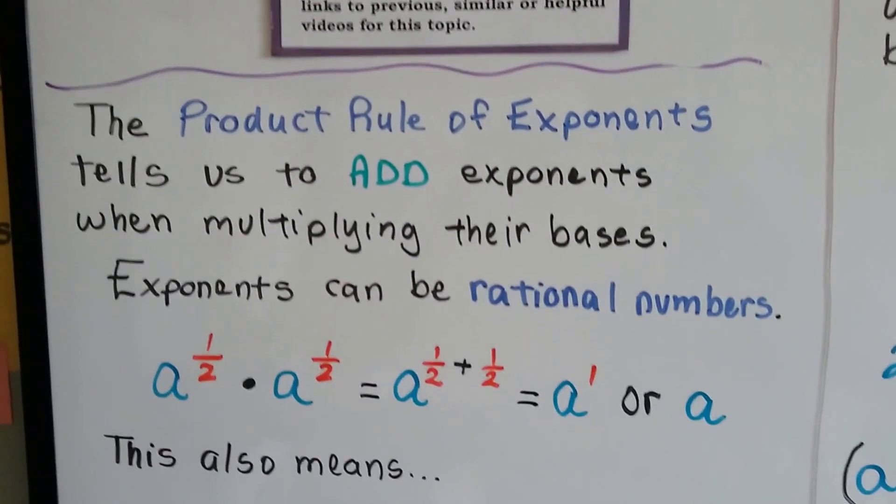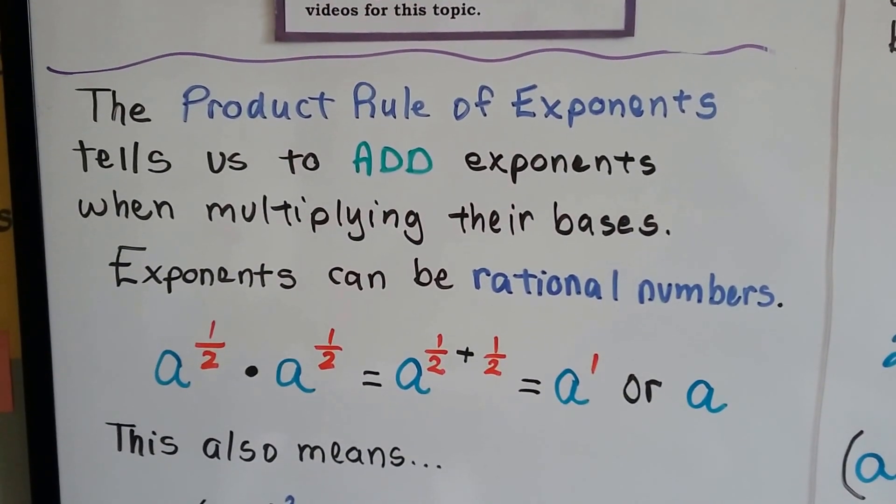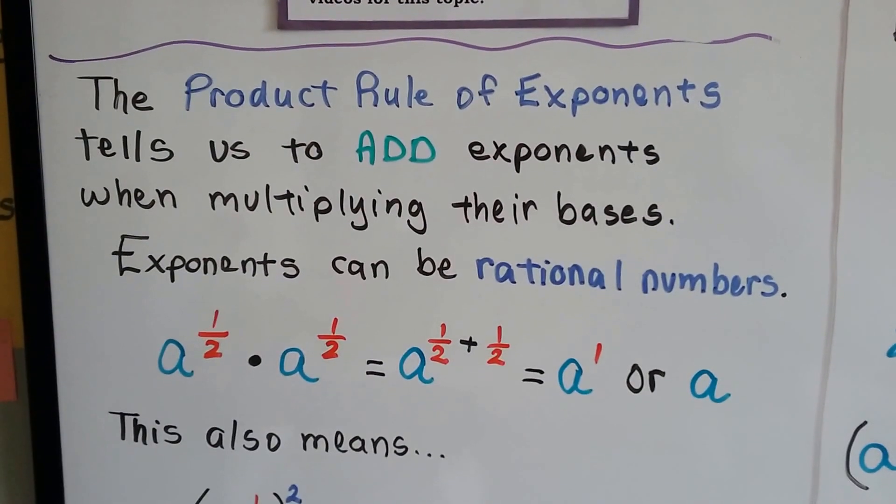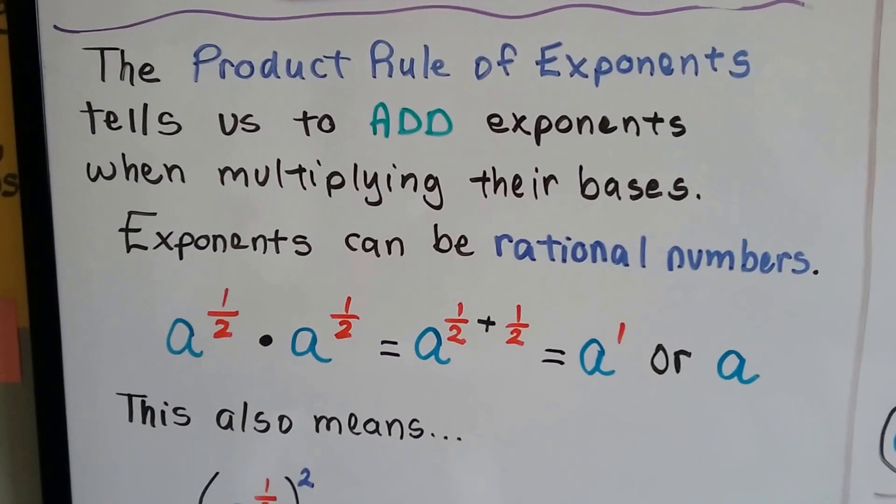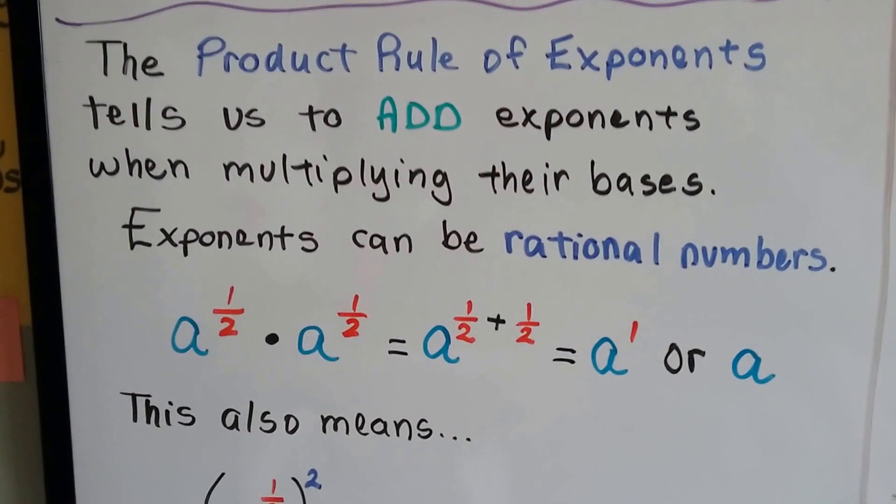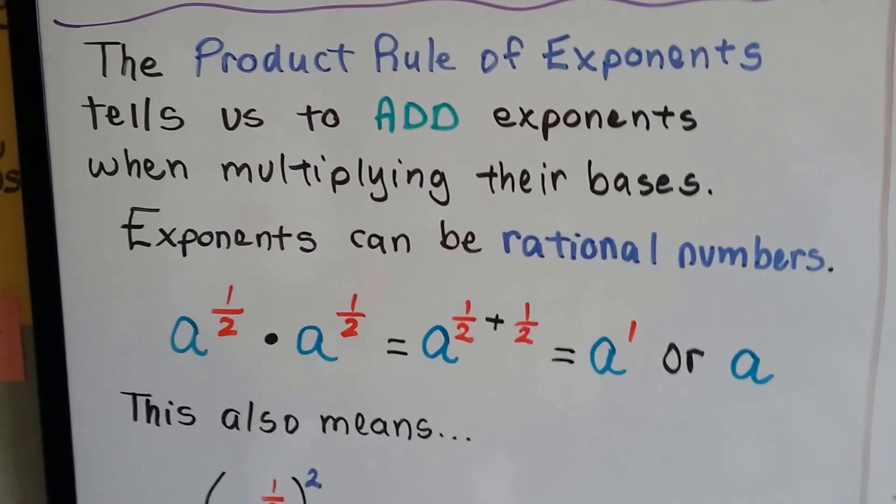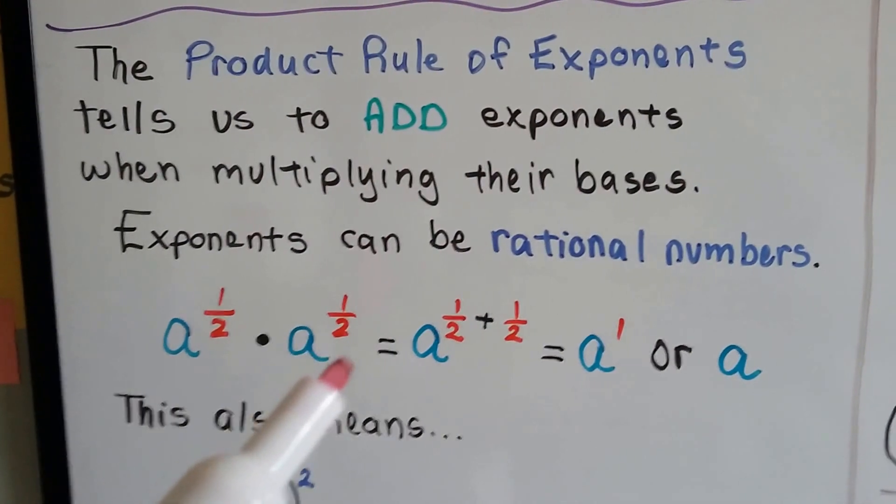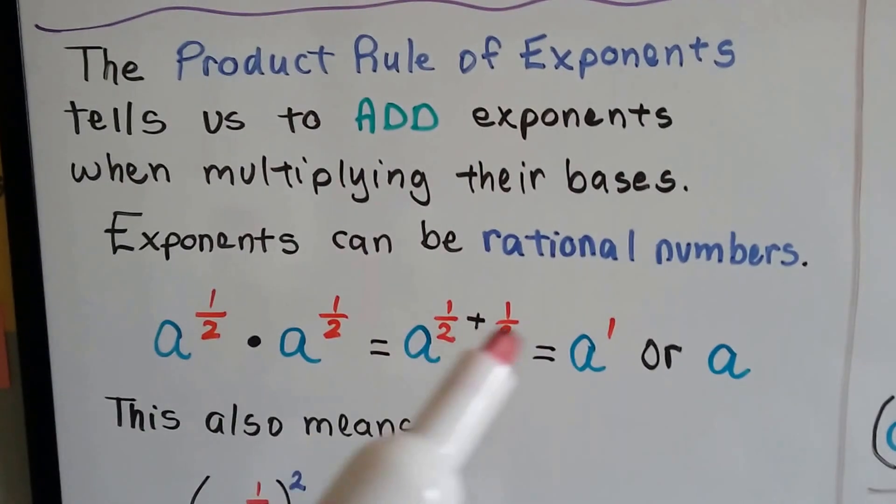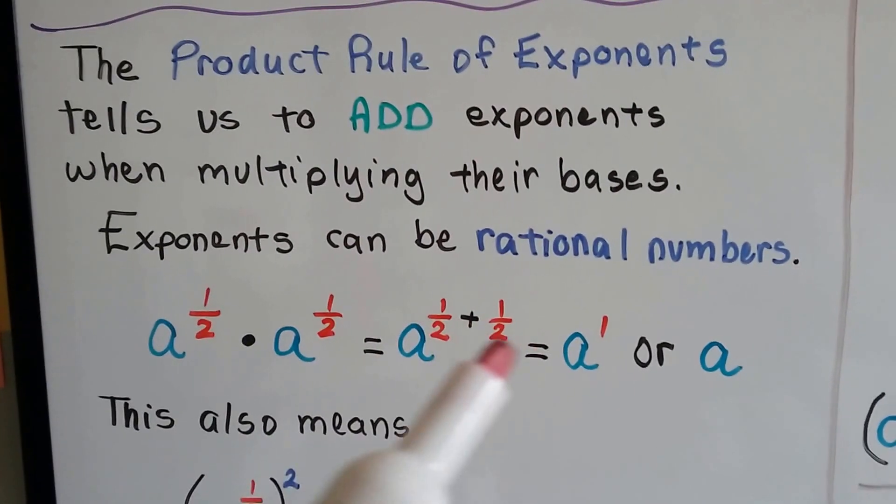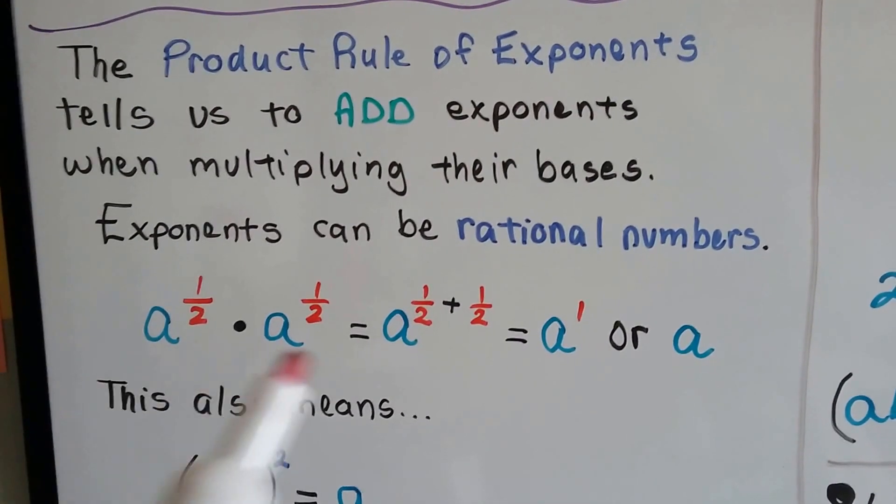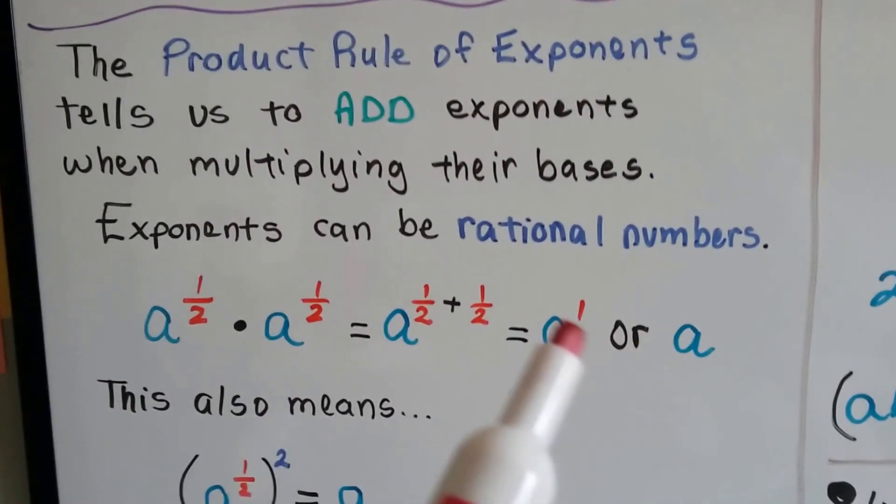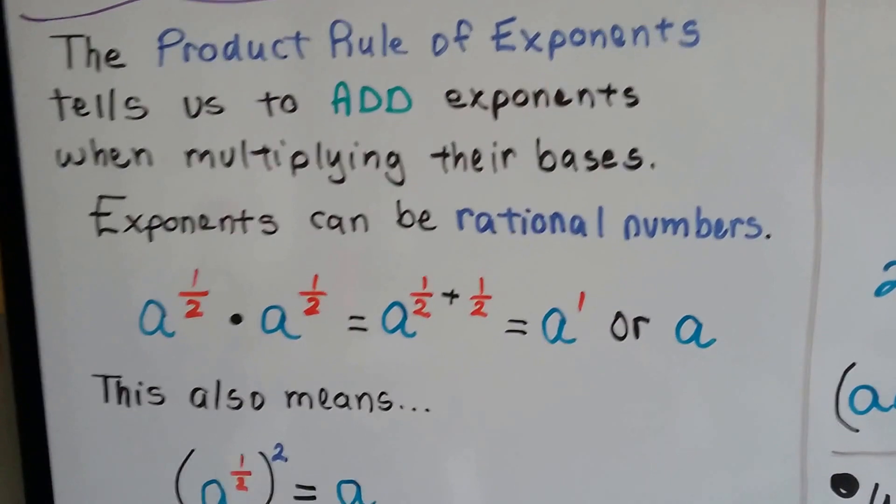The product rule of exponents tells us to add exponents when multiplying their bases. So exponents can be rational numbers. If we have a to the half power, and we multiply it by another one, we're going to add these two exponents. A half and a half makes a whole, so we have a one. We don't have to write that one, we can just write it as an a.